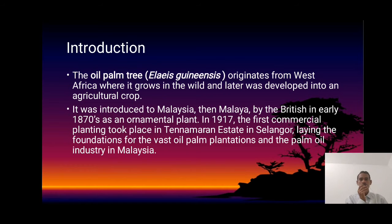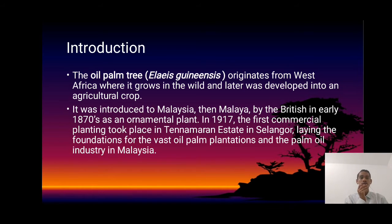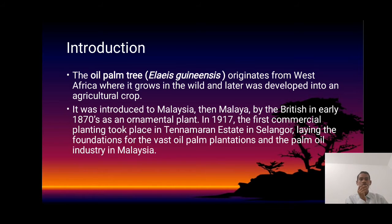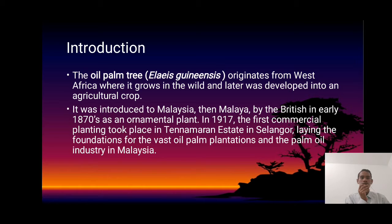For the introduction, the oil palm tree — scientific name Elaeis guineensis — originated from West Africa, where it grew in the wild, and was later developed into an agricultural crop. It was introduced to Malaysia by the British in early 1817 as an ornamental plant. In 1917, the first commercial planting took place in Temerang Estate in Selangor, laying the foundation of the oil palm plantation and palm oil industry in Malaysia.